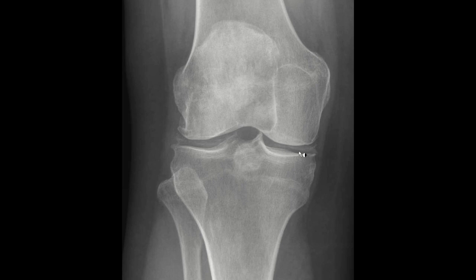The crystals in chondrocalcinosis are most commonly calcium pyrophosphate, and under microscopy, these crystals are more rhomboid-shaped and weakly positively birefringent to plain polarized light.